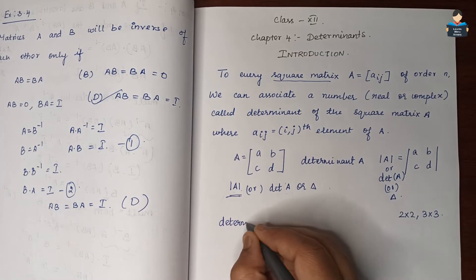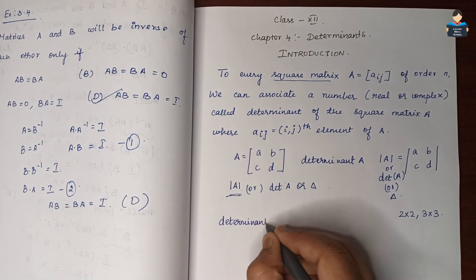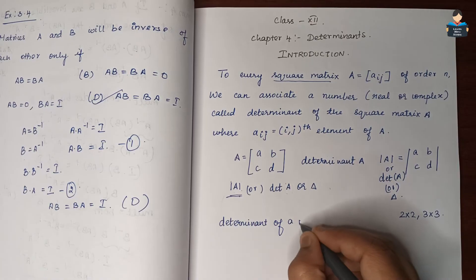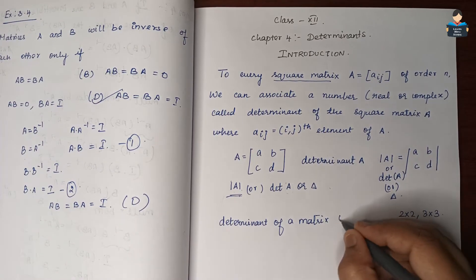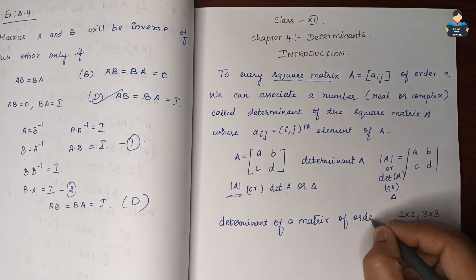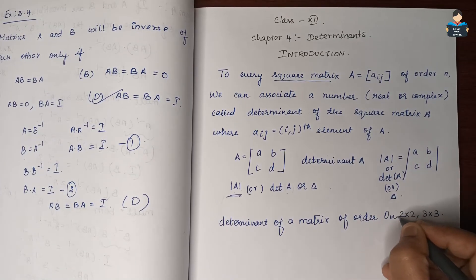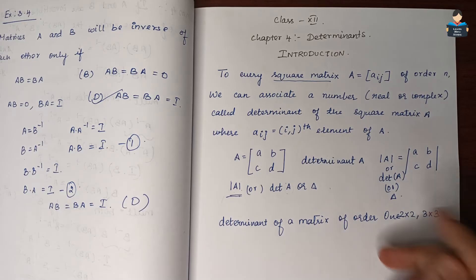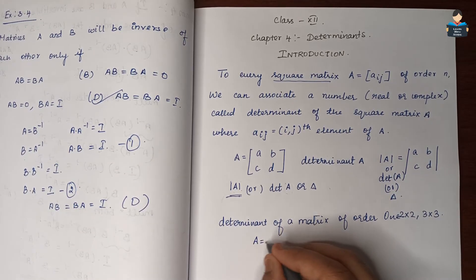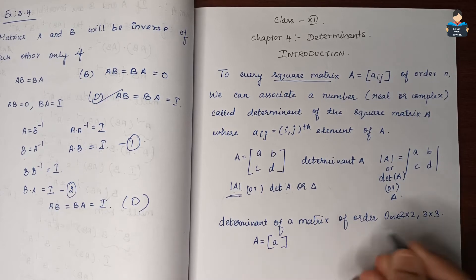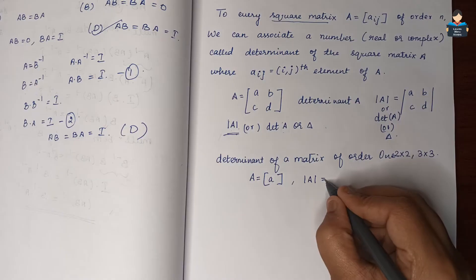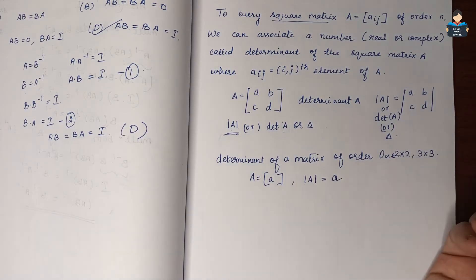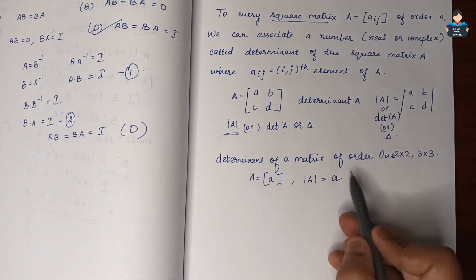The determinant of a matrix of order 1: if A is a matrix of order 1, then the determinant of A will be equal to A. That is, it equals the single element A itself.